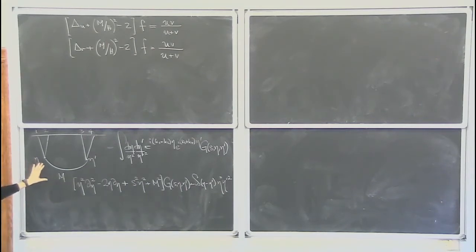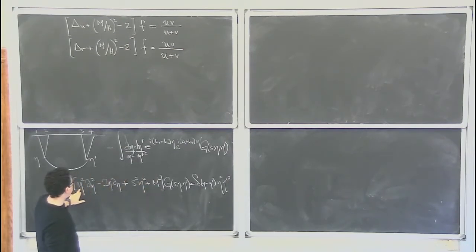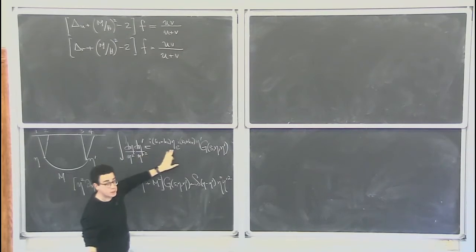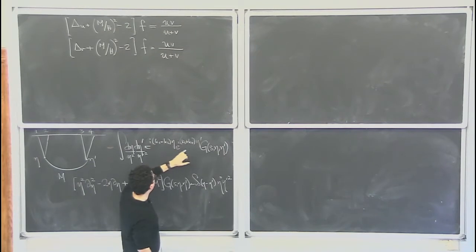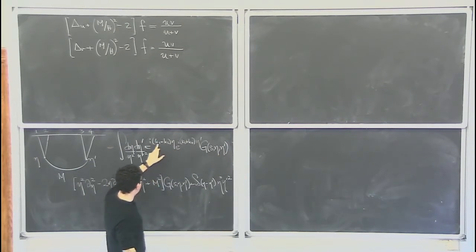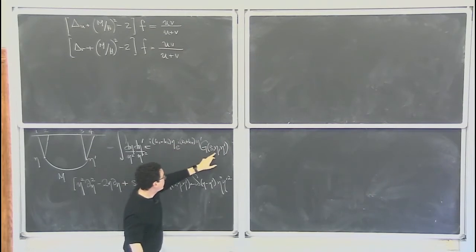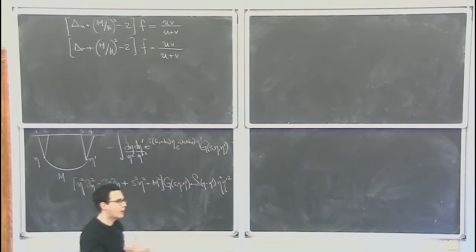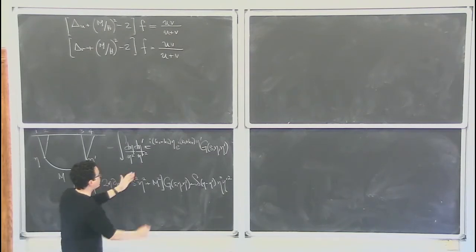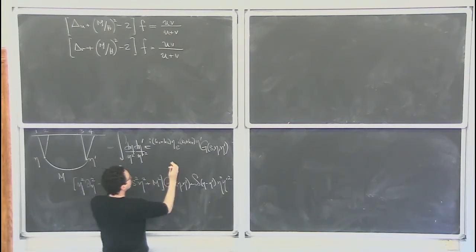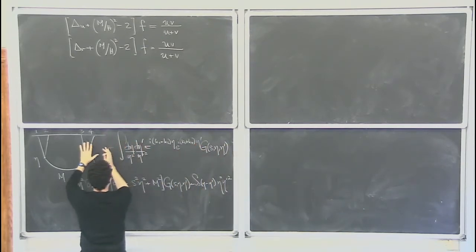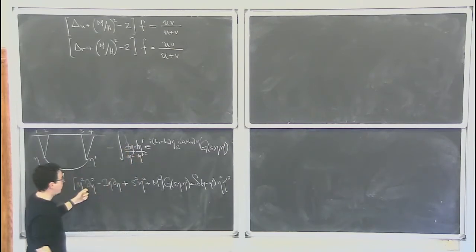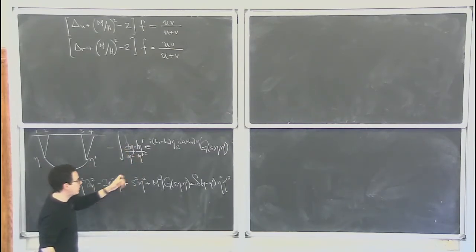The only non-trivial step is figuring out if you can trade time derivatives for momentum derivatives. That's where the fact that eta comes around for the ride with the momenta k and the momentum s becomes important. So you can trade time derivatives for momentum derivatives.